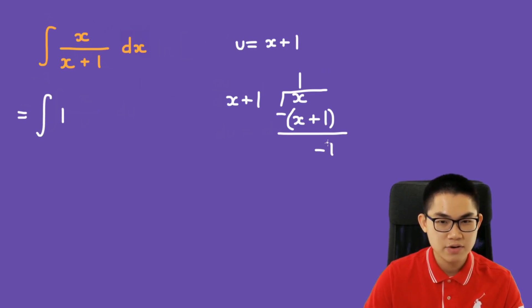So this integral is equal to the quotient is 1, then minus the remainder which is 1 over x plus 1 dx. So this way is completely fine.